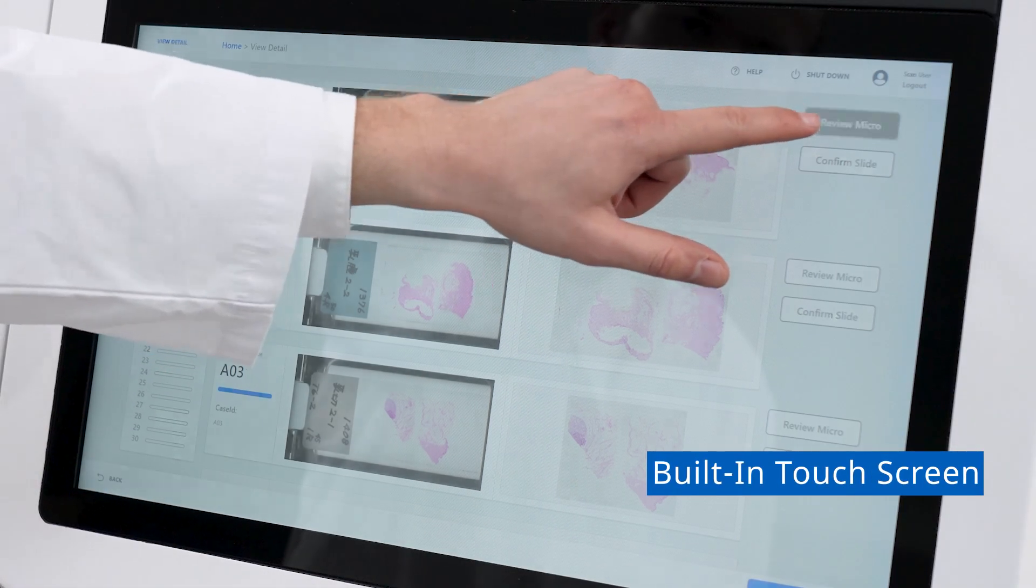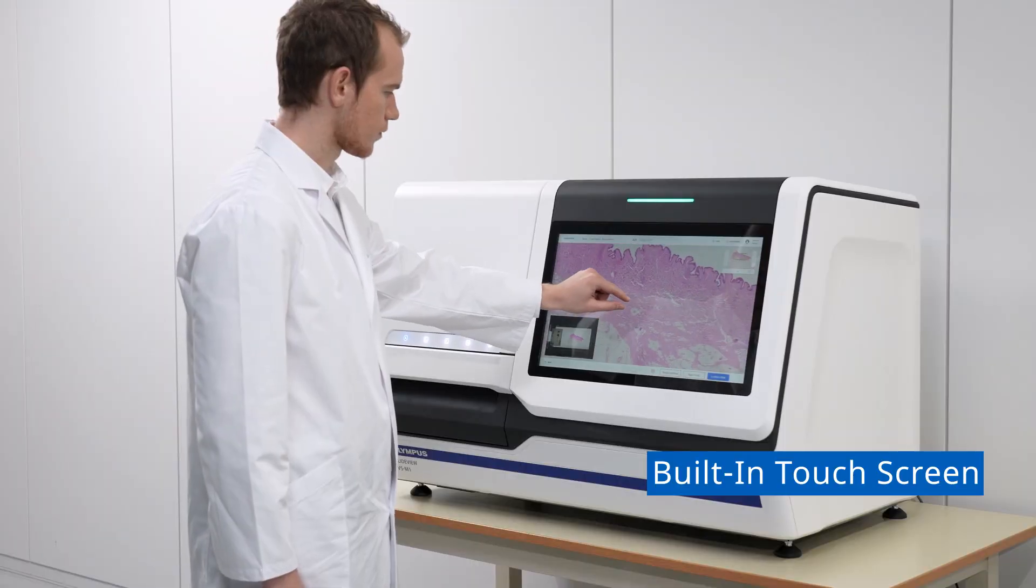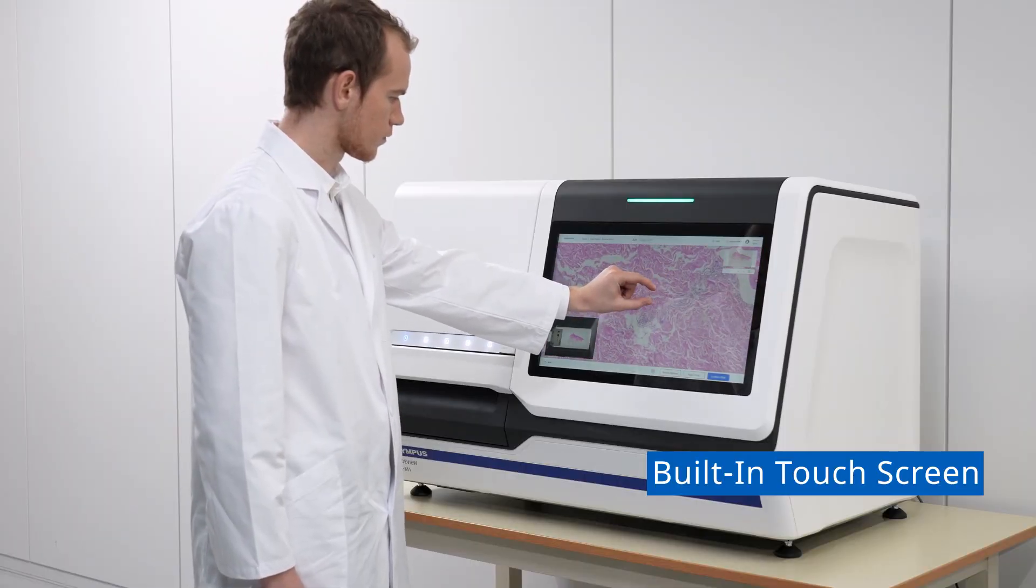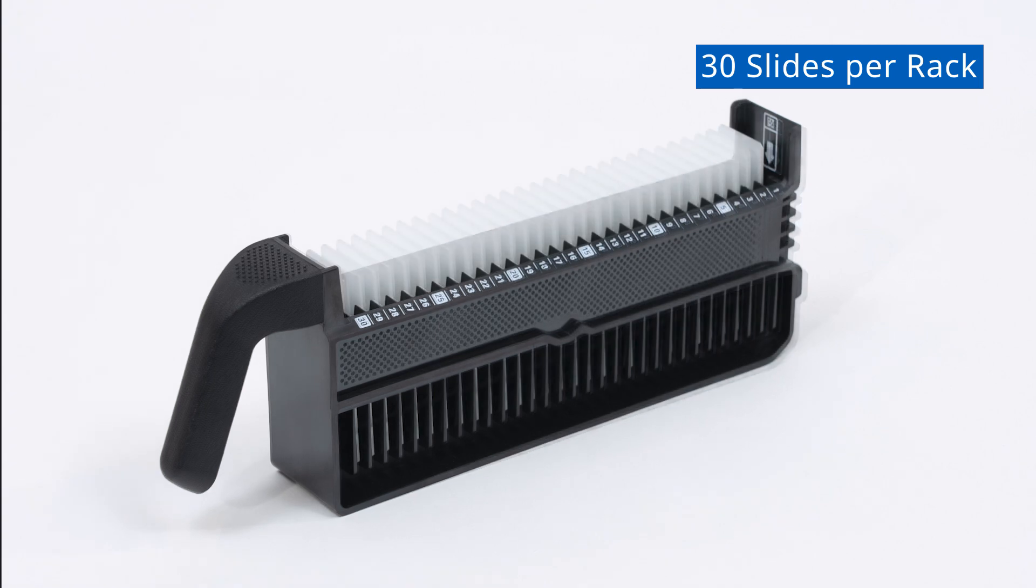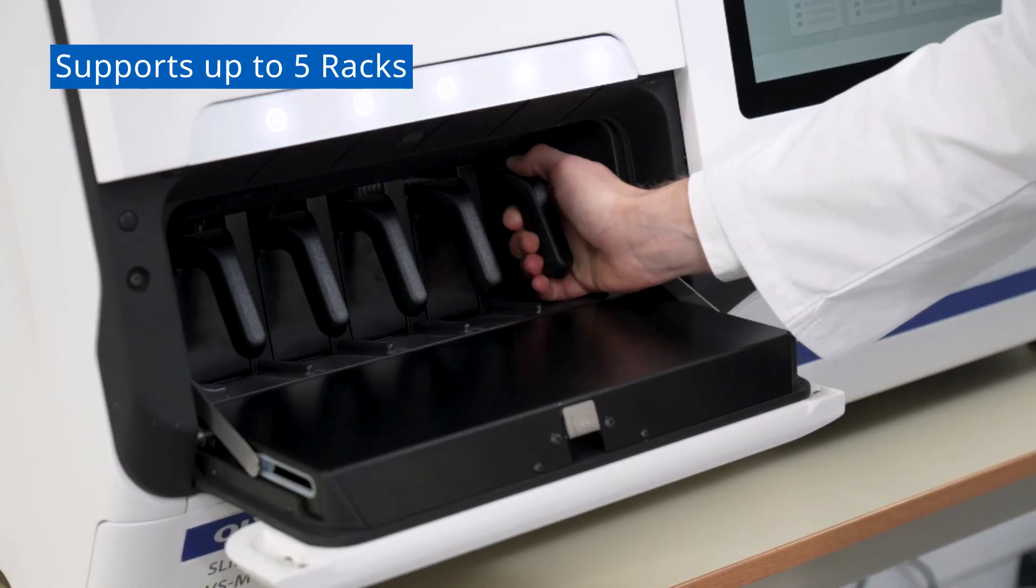Users can operate the VS M1R scanner through the system's large integrated touchscreen. Up to 30 slides can be loaded at once into a rack. The system can hold five racks for a total of 150 slides.